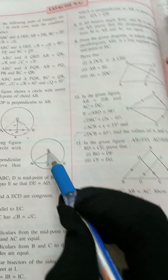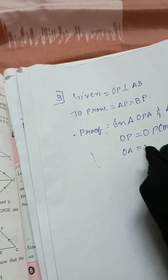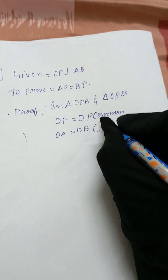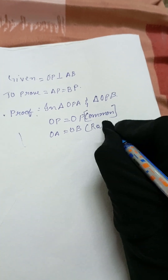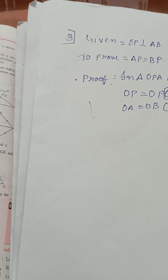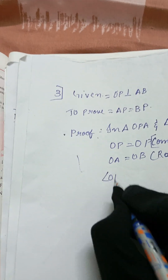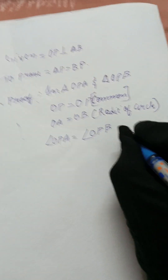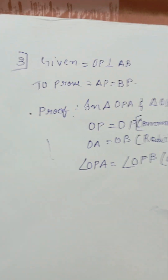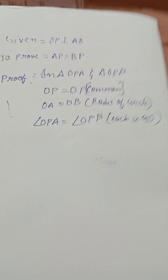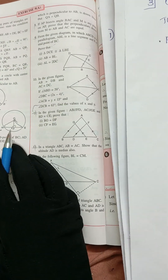OA is equal to OB, which are radii of the circle. Also, angle OPA is equal to angle OPB, and each is equal to 90 degrees, as given in the figure.